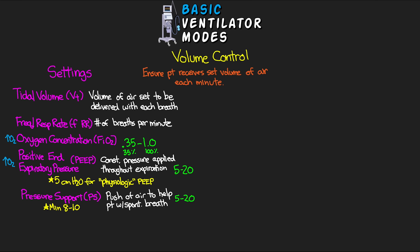Those are all the settings for volume control modes. Now let's talk about a couple of important monitoring parameters. The first is minute ventilation, abbreviated VE — this is probably the most important one to understand because it's a measure of the amount of air being delivered to our patient per minute.